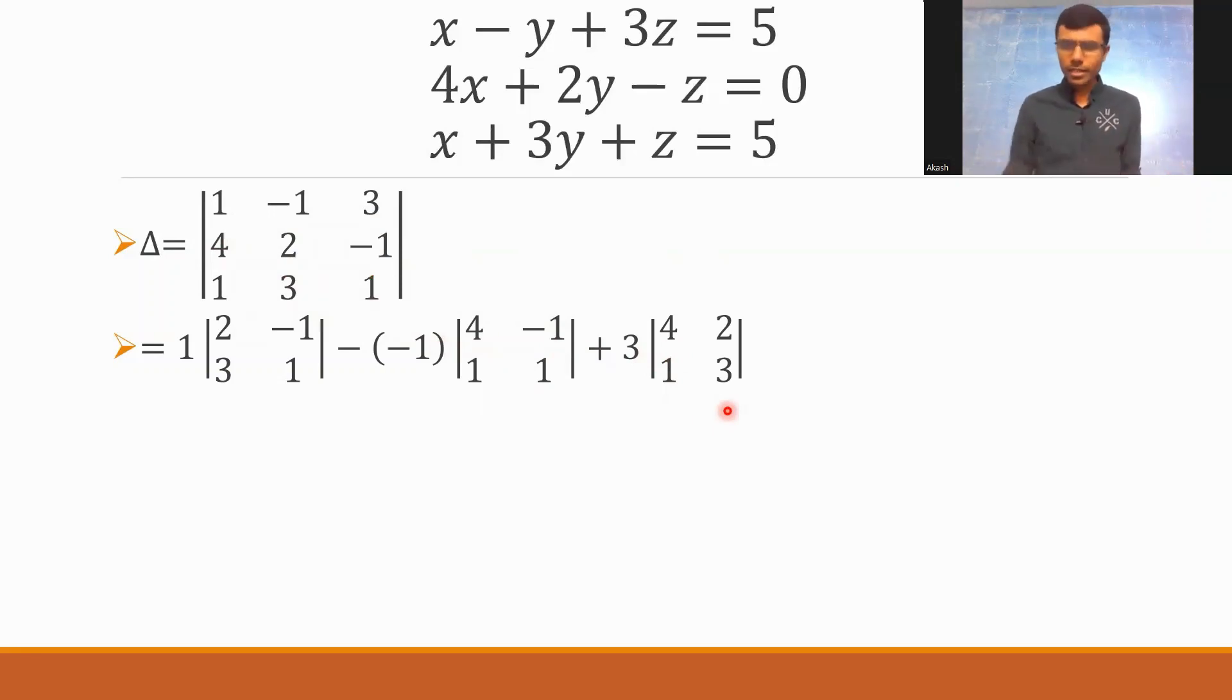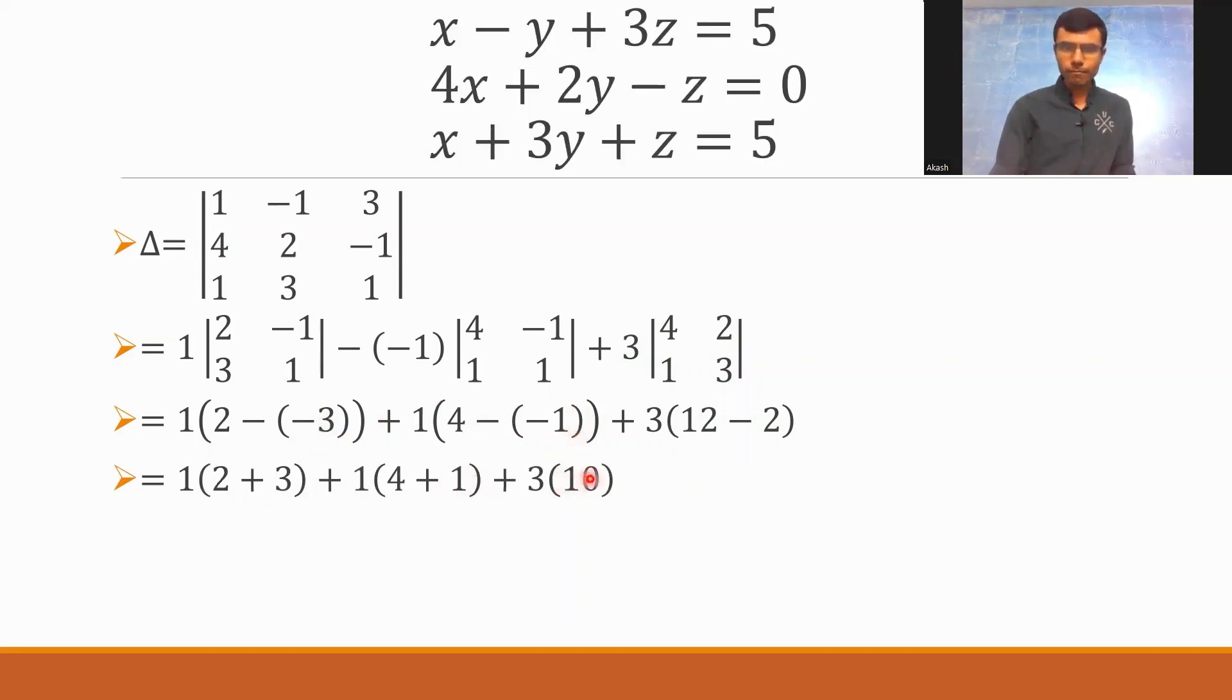Fine. Now, next, these small determinants are pretty easy to handle. This one would be nothing but 2 into 1 minus 3 into minus 1. So, 2, 1's are 2, and minus, 3 into minus 1 is minus 3. That's one part. Now, next, what is minus into minus? It is plus 1. And then, 4, 1's are 4, minus of minus 1. Plus 3 into 4, 3's are 12, and then 12 minus 2. If you'll simplify, 2 minus of minus 3 is 2 plus 3. And then, 4 minus of minus 1 is 4 plus 1. And then, 12 minus 2 is 10. 2 plus 3 is 5. 1 into 5 plus 1 into 5 plus 3 into 10. So, 5 plus 5 plus 30, which is nothing but 40. So, first thing, my determinant is not equal to 0. Since this determinant is not equal to 0, I can apply Kramer's rule and get the solution to this set of equations.